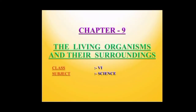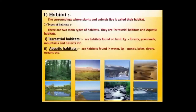Dear students, today we are going to study the chapter The Living Organisms and Their Surroundings, which is chapter 9 of your Science NCERT Class 6 book. We all know that plants and animals live in different places such as forest, mountains, deserts, sea, grassland and many more. But do you know what this place is actually called? The surroundings where organisms live is called a habitat.